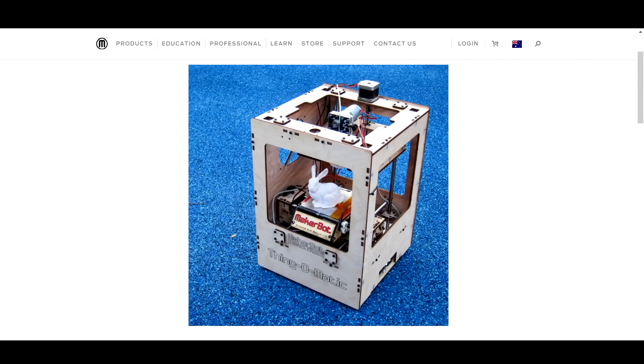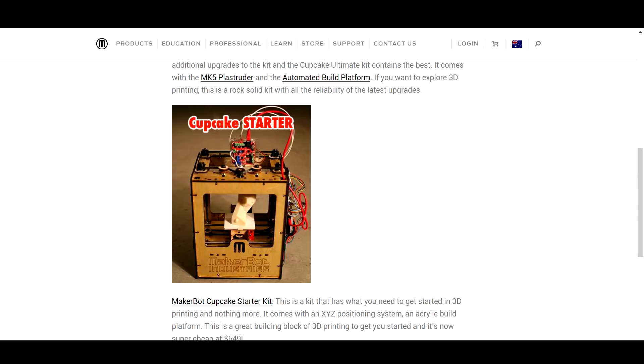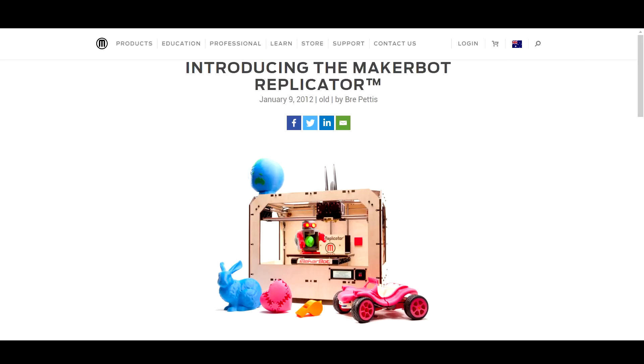MakerBot was also getting started and doing its thing. Its early printers, the Thing-O-Matic and the CNC Cupcake were pretty similar to the Darwin. At this stage 3D printing was definitely only for the hardcore tinkerers. Then MakerBot released the Replicator 1. It looked pretty good, the build surface was a decent size, it seemed reliable, and compared to everything that came before it, it was really revolutionary.